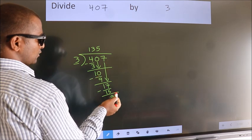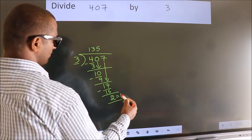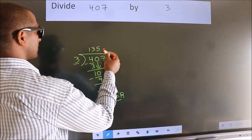No more numbers to bring it down. So, we stop here. This is our remainder. This is our quotient.